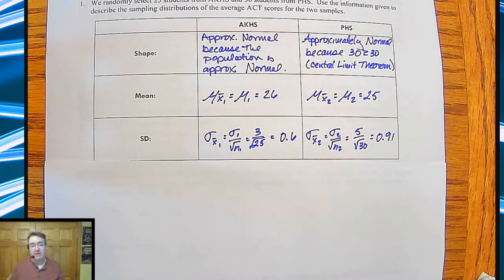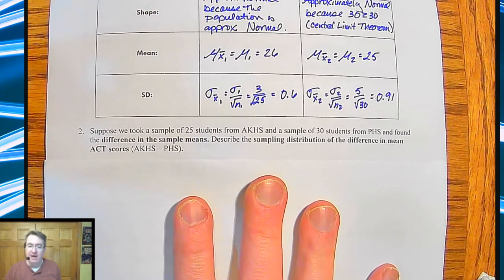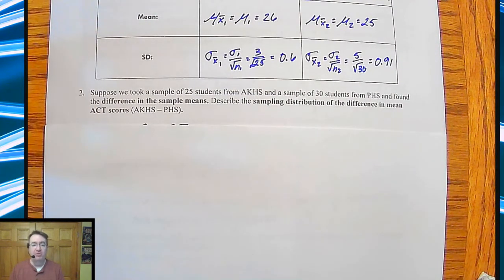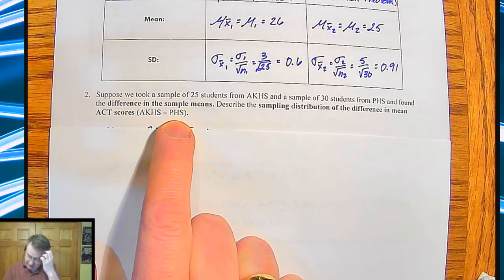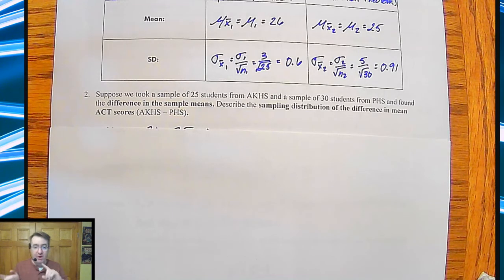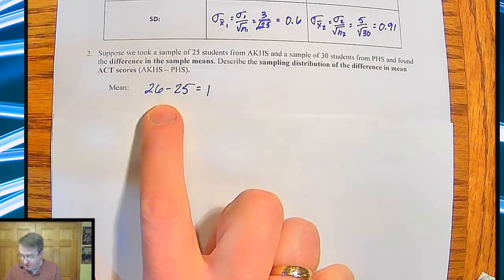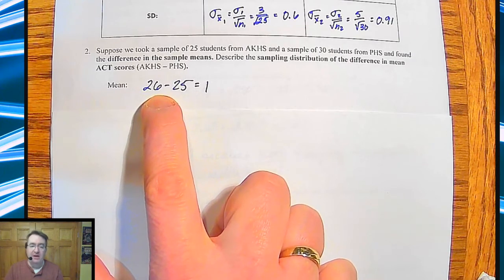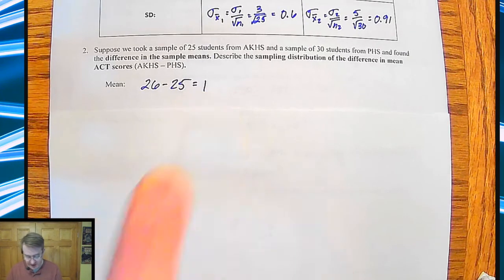Why is that important? Because we're going to start subtracting these. Here's the next question: Suppose we took a sample of 25 students from AKHS and 30 from PHS and found the difference in the sample means. Describe the sampling distribution of the difference of mean scores. So we're going to take AKHS minus PHS. In practice it doesn't really matter which one you do, just make sure you follow whatever the question is saying. So the mean, it would seem to make sense that we're going to subtract these two, subtract the two sample means. So this would mean that the AKHS scores are a point higher than PHS.